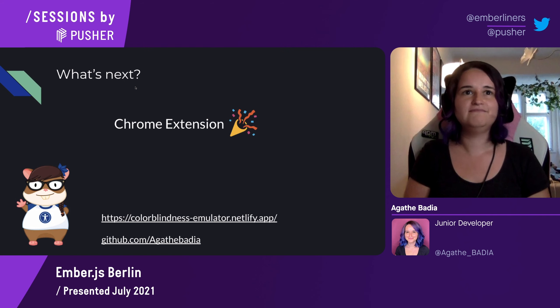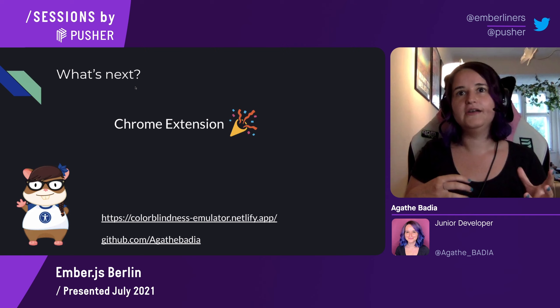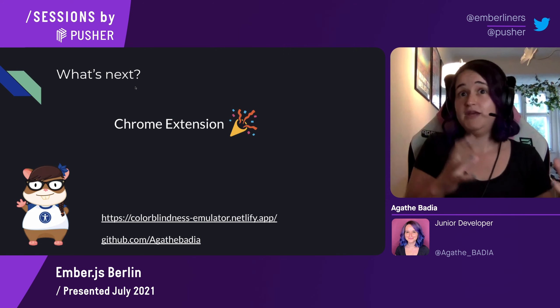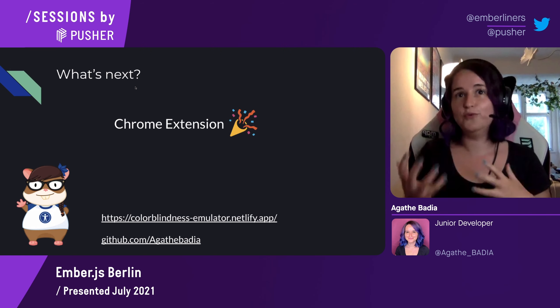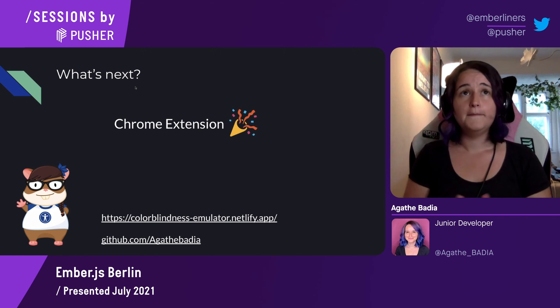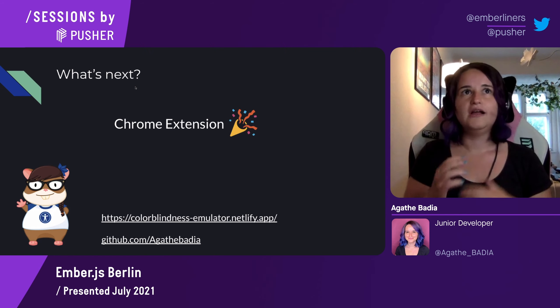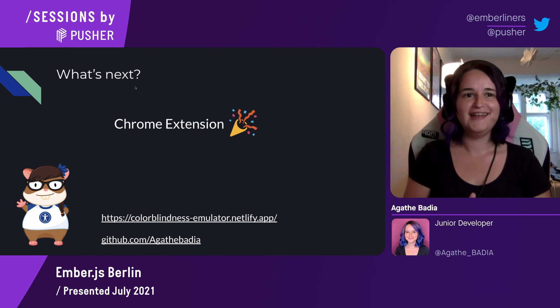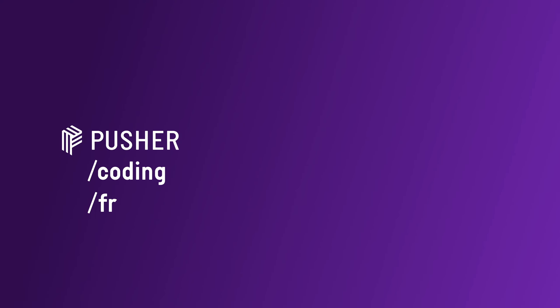As a next step, I'd love to implement this project as a Chrome extension to let people emulate colorblindness on any web page, bringing greater awareness of all the different types and allowing developers to test and improve their products. You can check out the website at colorblindnessemulator.netlify.hub and the repo is under GitHub AgatPadiya. Thank you so much — if you have any questions I'm happy to answer, and I can share the presentation and the project.